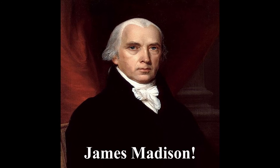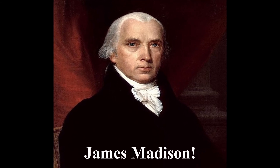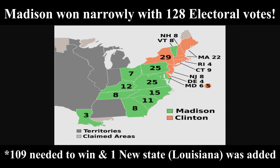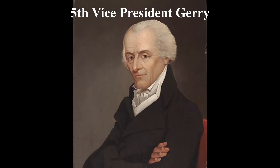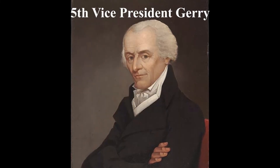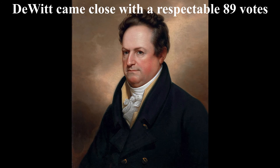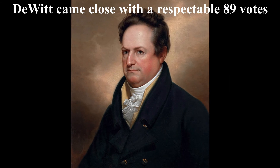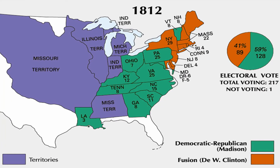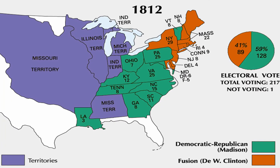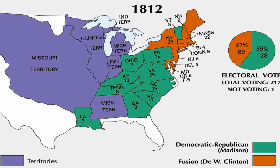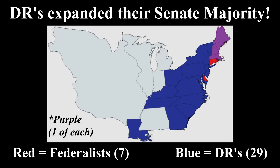James Madison won, remaining the 4th President in American history. He barely won with 128 electoral votes in a really close race against fellow Democratic Republican DeWitt Clinton. Elbridge Gerry became the 5th Vice President in American history, while DeWitt Clinton came close with a respectable 89 electoral votes. This race was a nail-biter compared to the previous ones, and did far better than what the Federalists had done in recent elections.